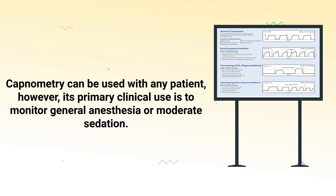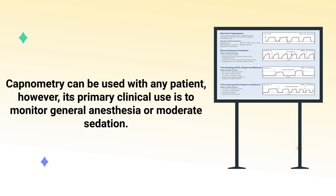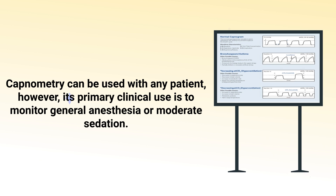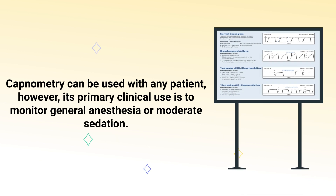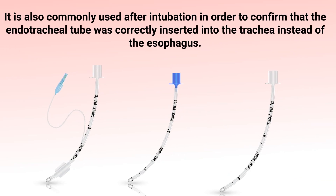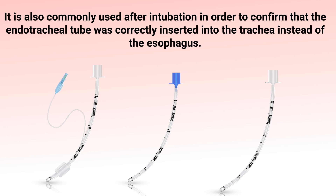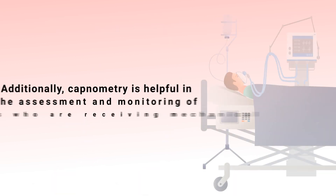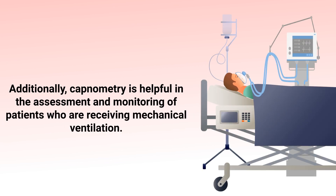The display shows wavelengths and number measurements that tell us how much CO2 is being exhaled. For the normal value range, a normal capnometry reading falls between 30 to 40 torr. In respiratory care, capnometry can be used with any patient; however, its primary clinical use is to monitor general anesthesia or moderate sedation. It is also commonly used after intubation to confirm that the endotracheal tube was correctly inserted into the trachea instead of the esophagus.